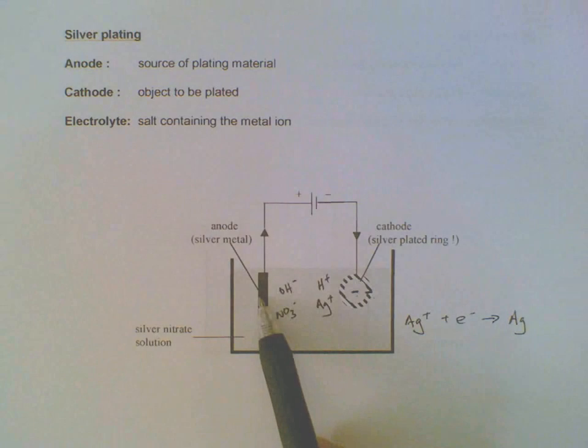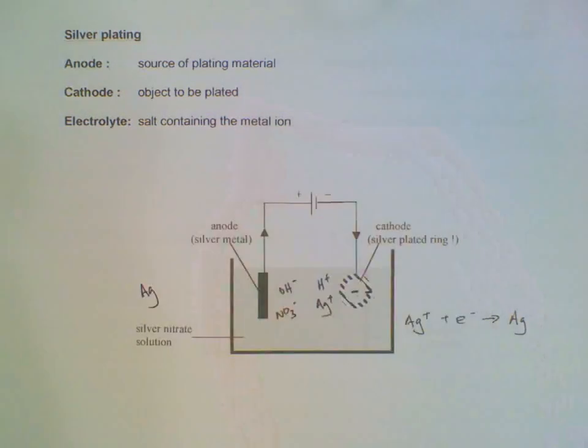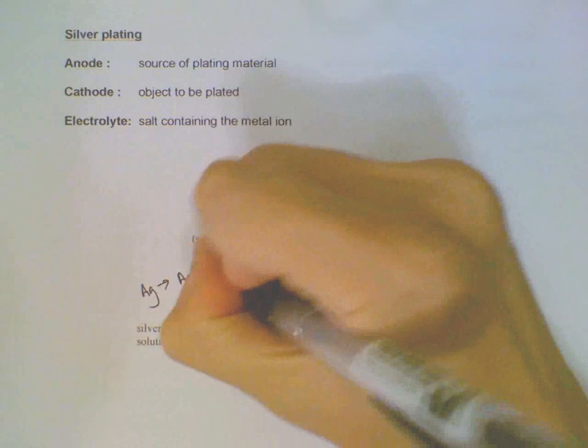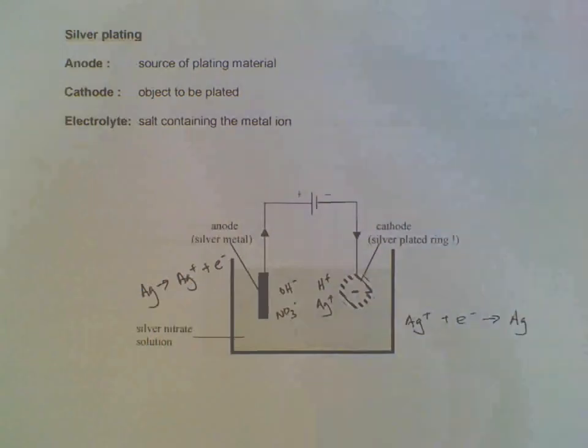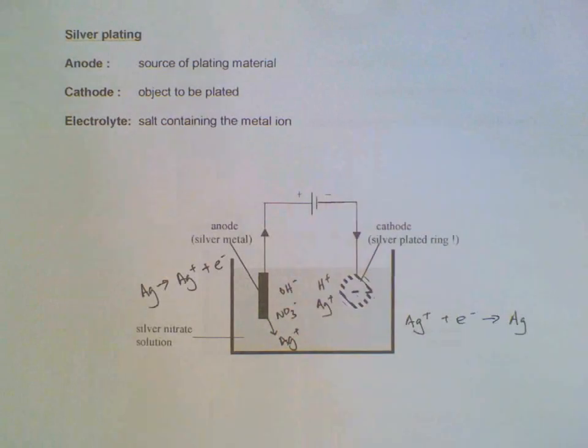On this end we have silver metal. This is an active electrode. It will not discharge or oxidize the anions. What happens exactly is it will oxidize itself. So the silver here will form silver ion which will be released into the electrolyte.